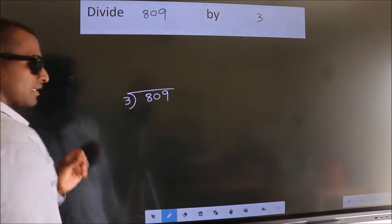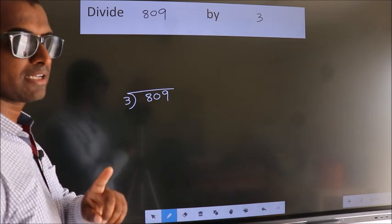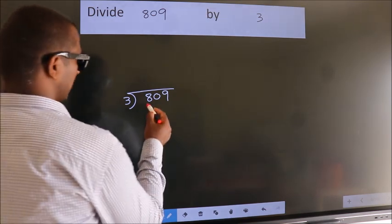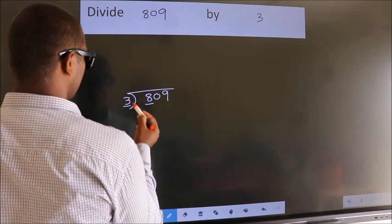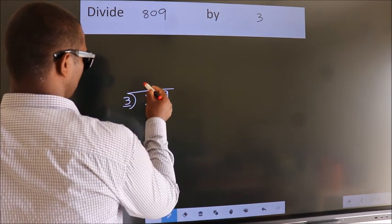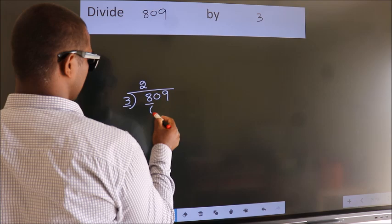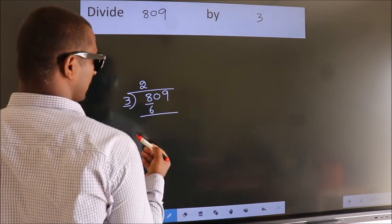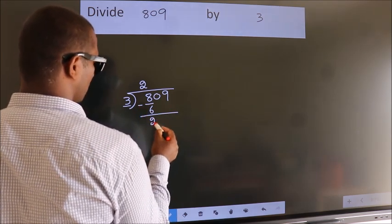This is your step 1. Next, here we have 8, here 3. A number close to 8 in the 3 table is 3 times 2, which is 6. Now we subtract and get 2.